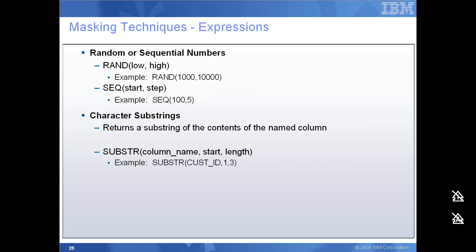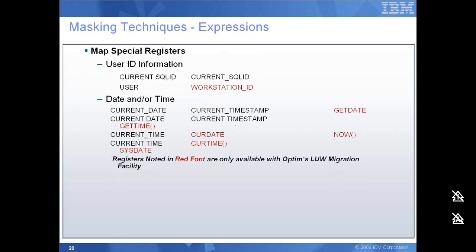The definition of these substrings is pretty much the same as in the RDBMS, wherein I can specify a column name and the start and the length of the extracted substring. Other examples of expressions include special registers like workstation ID, current SQL ID, and the username. I can use this register information and store it in a privatized column. I can also make use of other built-in registers like current timestamp, current date, and system date.